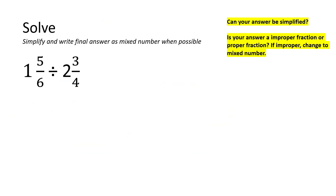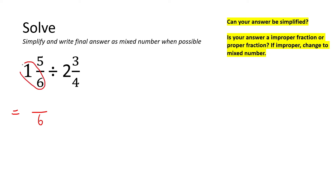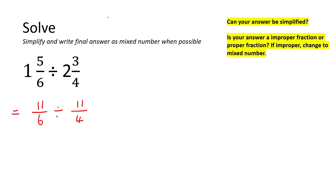Here we have mixed numbers. When you've got mixed numbers, I would always say change them to improper fractions first. The way you do that: the denominator stays at the bottom. Then you say 1 times 6 which is 6, plus 5 is 11. Then you write the divide sign, put a 4 at the bottom, then 2 times 4 is 8, plus 3 is 11. Now here we have a divide sign, so we use KCF: keep the first one the same, change the sign, and flip the second fraction upside down.